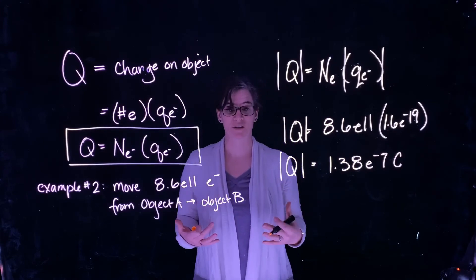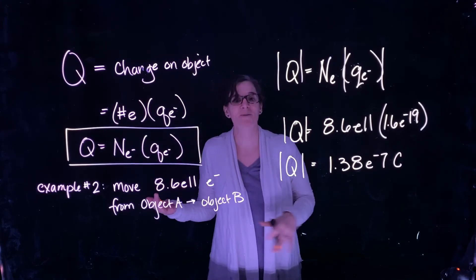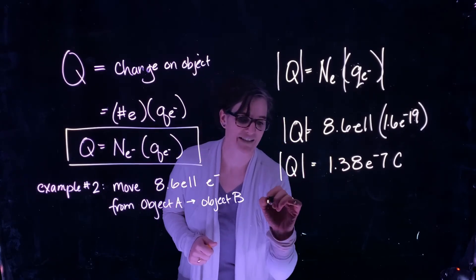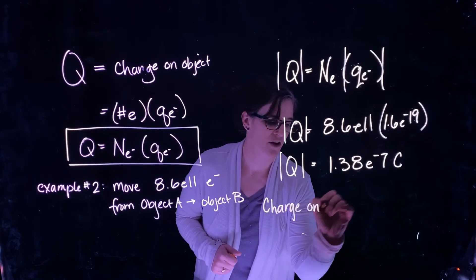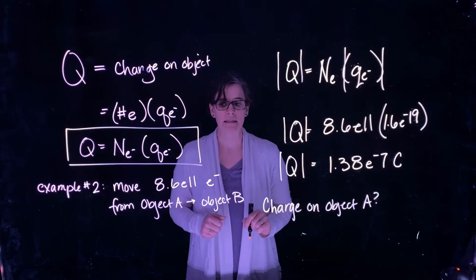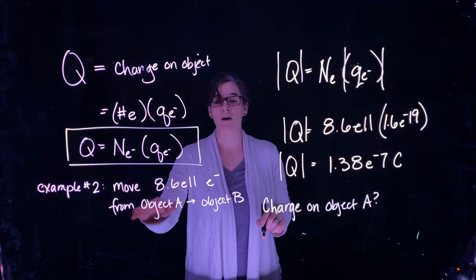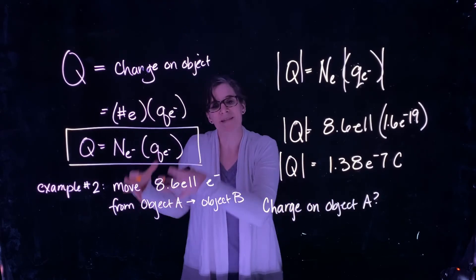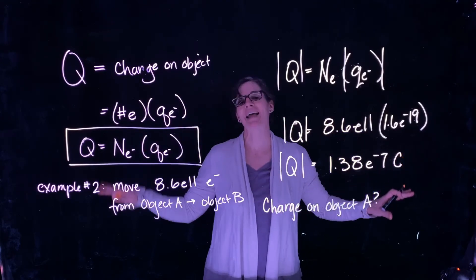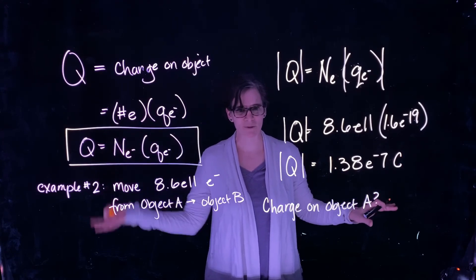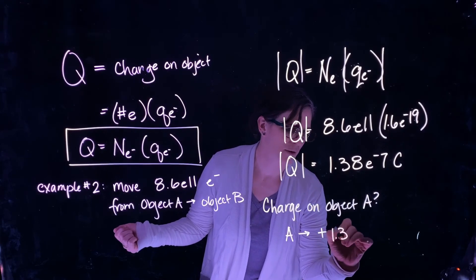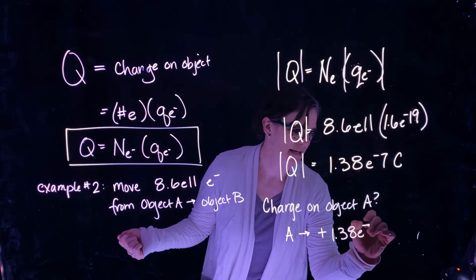That's the magnitude of the charge — but is object A positively or negatively charged? The question asks for the charge on object A. We're told electrons move from A to B, so we're taking electrons off of A in a fixed amount and putting them on B. Object A is left with fewer electrons than it started with. Therefore, the charge on A must be positive 1.38 times 10 to the minus 7 coulombs.